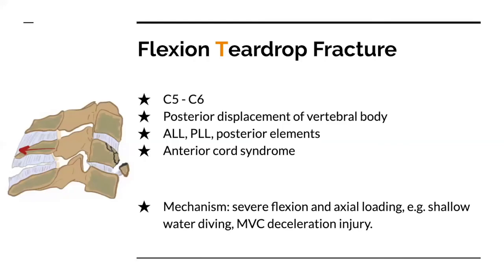Flexion teardrop fracture most commonly occurs at C5 or C6. You get a small triangular piece coming off the inferior portion of the vertebra that can be minimally displaced. Compressive and rotational forces contribute to the mechanism, leading to posterior displacement of the vertebral body and rupture of the posterior longitudinal ligament. Spinal cord injury is common and associated with anterior cervical cord syndrome. Mechanism is severe flexion, axial loading, and rotation — like diving in shallow water or deceleration injuries in a car accident.